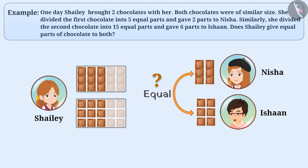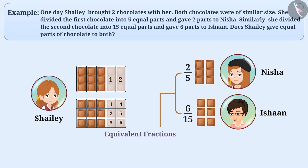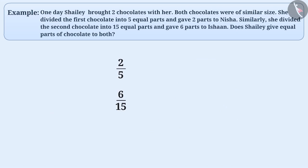Does Shelley give equal parts of chocolate to both? She gave two by five parts of chocolate to Nisha, and six by fifteen parts of chocolate to Ishan. We want to find out whether Shelley gave equal parts to both. When both fractions are equivalent fractions, we can say they have equal value — meaning both received an equivalent share. So let's find whether two by five and six by fifteen are equivalent fractions.